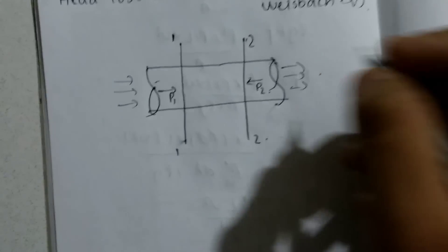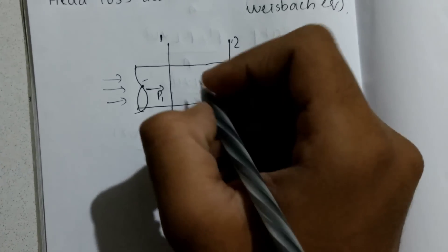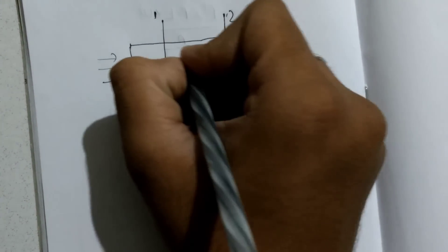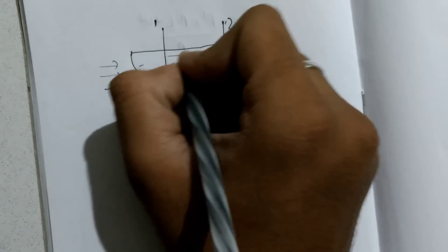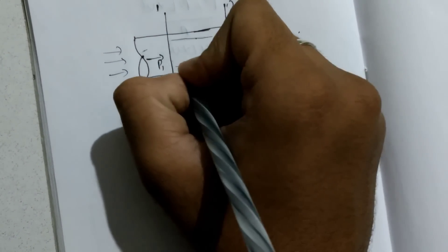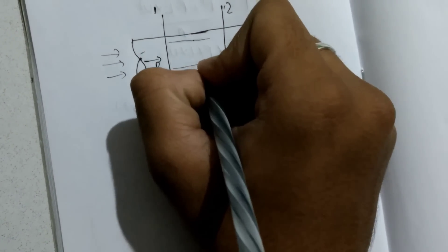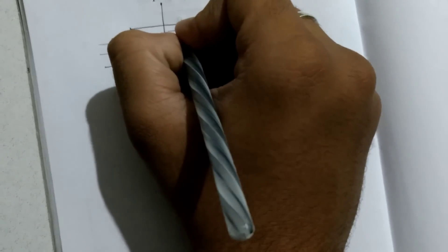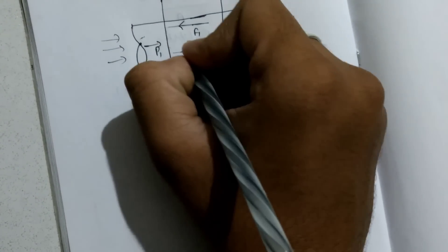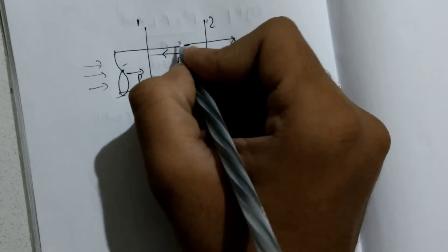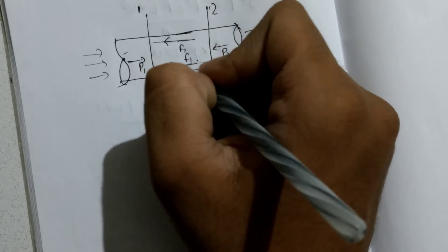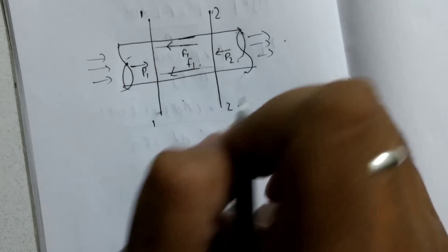We have pressure intensity of fluid at the inlet and pressure intensity at the outlet — P1 and P2. And as the fluid flows through the pipe, this layer of fluid and the surface of the pipe, there exists friction between them, denoted F1. The friction is the same throughout because the material of the pipe is the same, and the fluid is also the same.